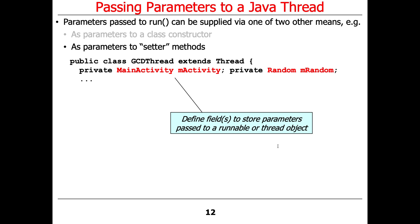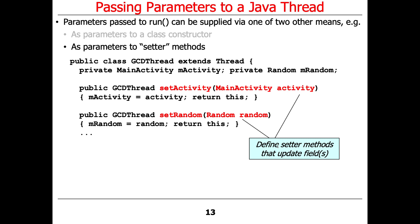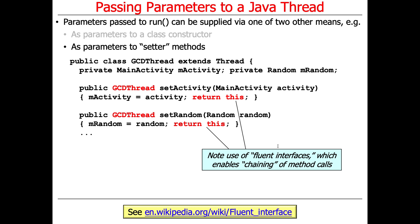In this case, we're going to have two fields in the GCDThread class: one is the activity, which we had before, and the other is a random number generator. Then we define a couple of setter methods — setActivity and setRandom — which take in an activity and a random number generator respectively. They set the field to the given parameter, and then they also return 'this'. By returning 'this', we can use something called fluent interfaces.